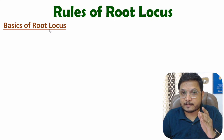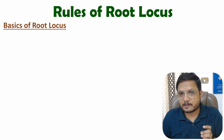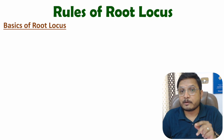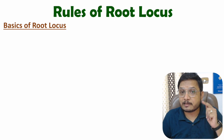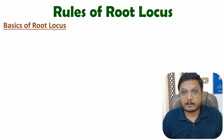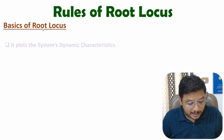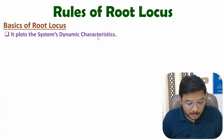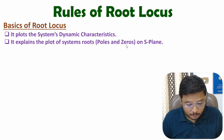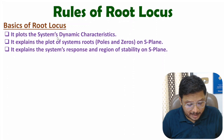Root locus explains a system's dynamic characteristics, and we plot it on the s-plane. With the use of a system's dynamic characteristics we can identify the stability region and the system's response. With root locus plotted on the s-plane, we plot the roots of the system — roots means poles and zeros — and we can identify the system's response and stability region.